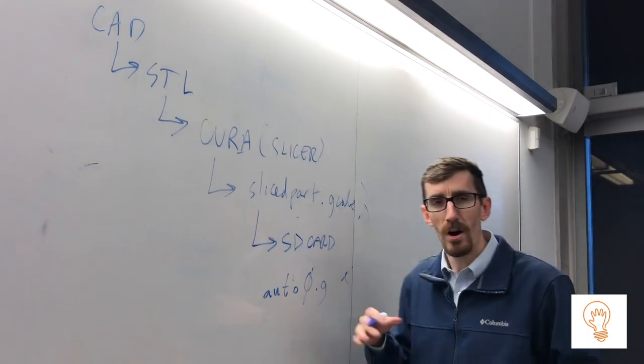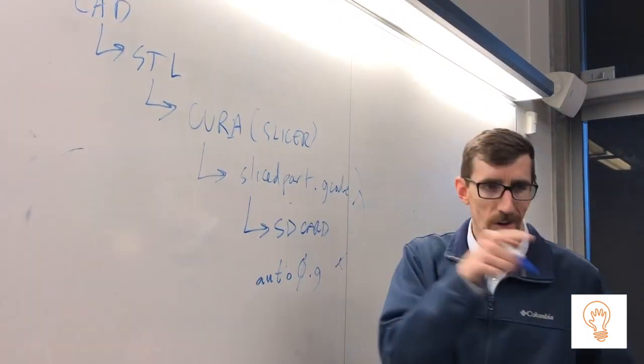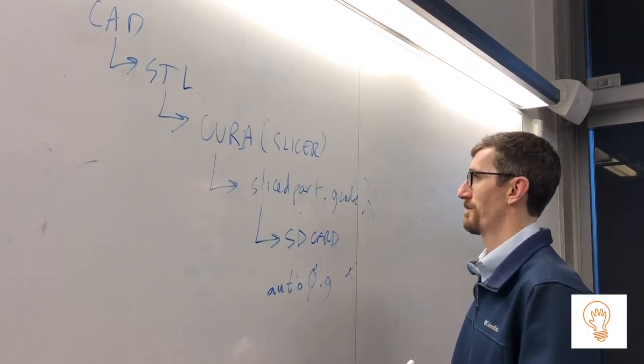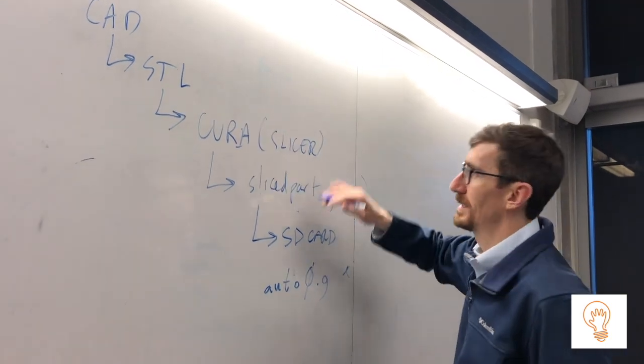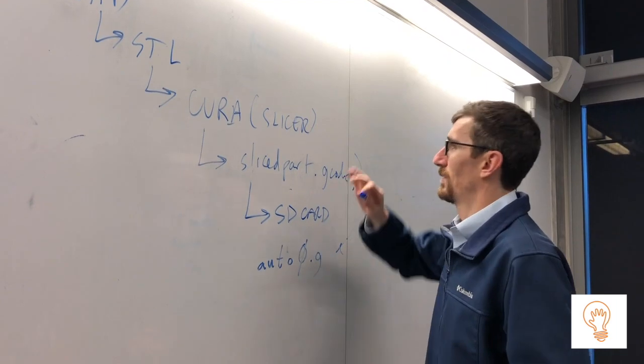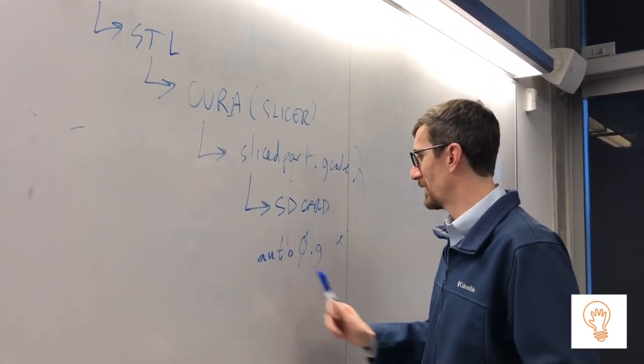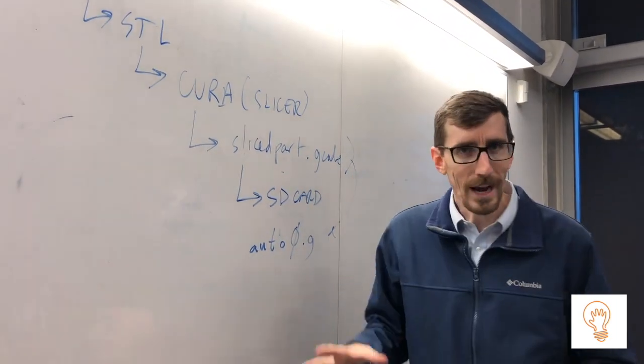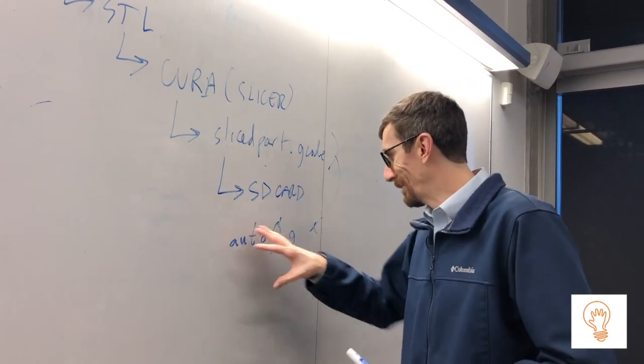That's almost done. Then you save this to an SD card and you have to rename this file to auto0.g, and that's going to auto-start the print on a Printrbot 3D printer.